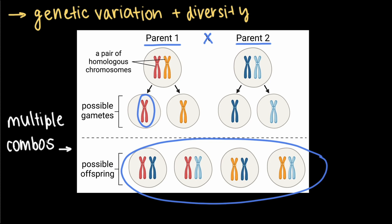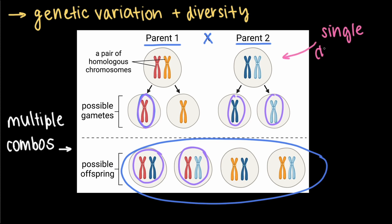For example, the pink chromosome from parent 1 can be paired with the dark chromosome from parent 2 in one offspring, and the light blue chromosome from parent 2 in another offspring. Keep in mind that this diagram only shows the inheritance of a single chromosome, but in humans this occurs for all 23 of our chromosomes. As a result, there are millions of different chromosome combinations that an offspring can inherit.